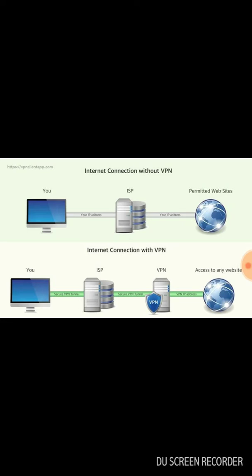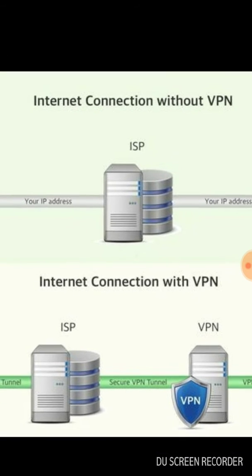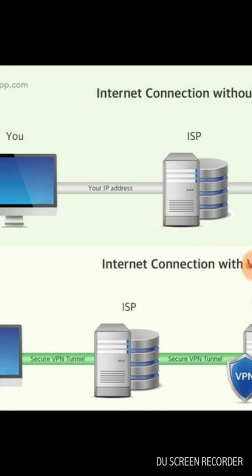This is VPN. First, without VPN — this is our computer, this is the accessibility website, and this is the ISP. ISP is the Internet Service Provider — that is our router and our phone which can access the internet. So first, our IP address is the request.